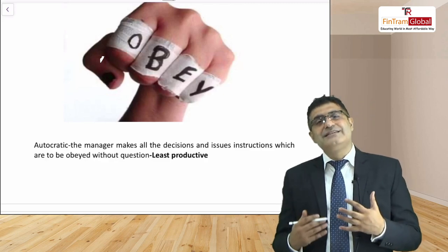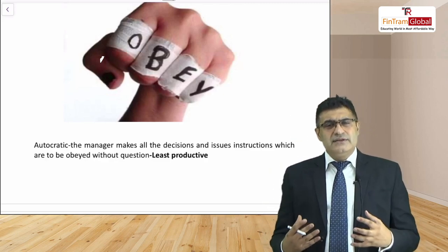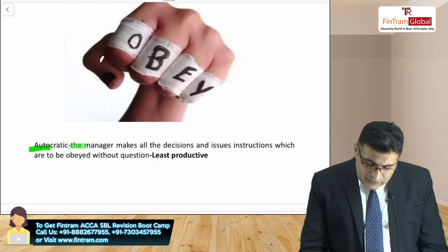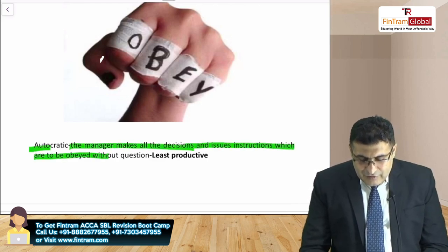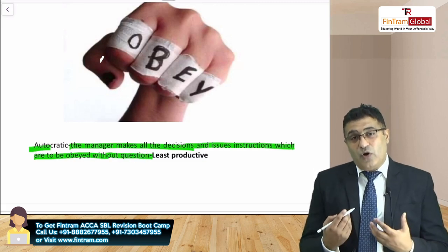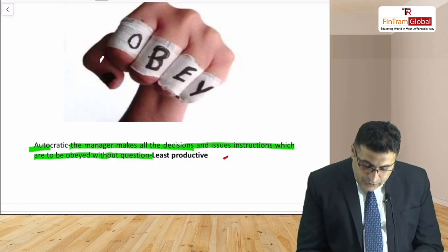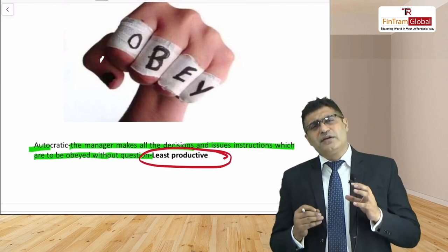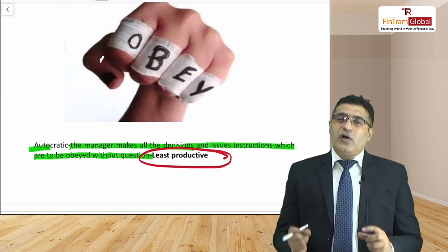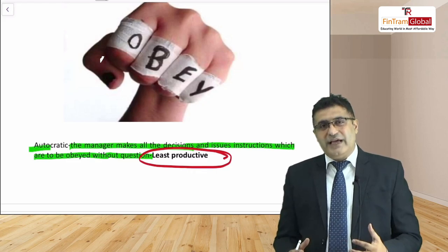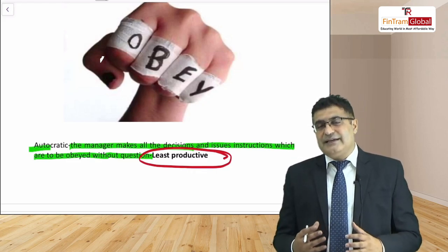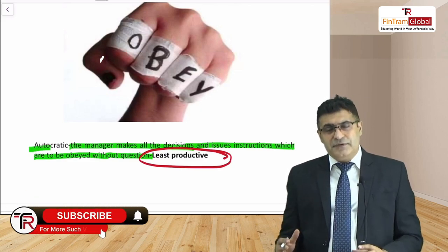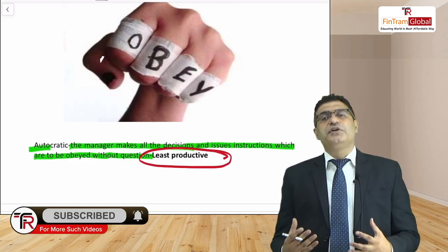An autocratic leader is one where the manager makes all decisions and issues instructions to be obeyed without question. I personally feel this is the least productive way of managing a team or organization. You cannot get the best out of people if you always say 'just do it as I say.' People feel suffocated; they cannot add their own perspective.